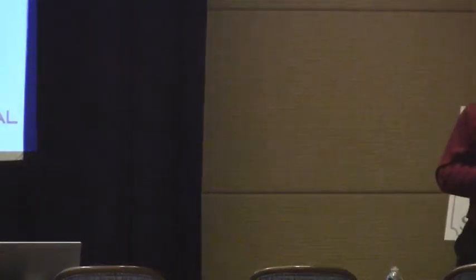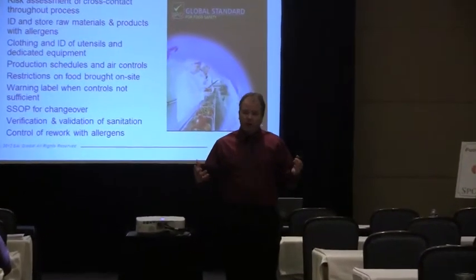One good requirement from BRC is restrictions for food brought on site. What's in your vending machine? Can your employees bring in their lunch — a peanut butter and jelly sandwich? BRC talks about having a policy in place to restrict food brought on site. You can't just say we don't have any allergens and not worry about it if there are peanuts in your vending machine. You've got to have a policy that controls how you train your people and keeps allergens out of the production room and away from products.